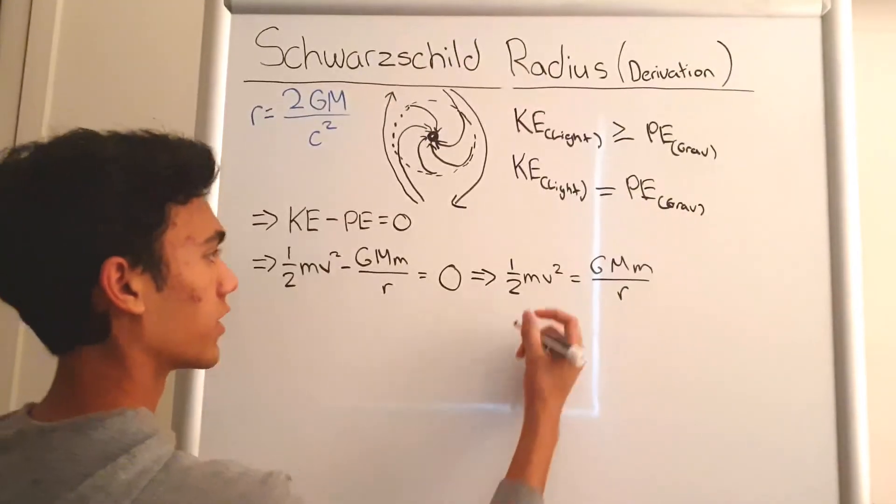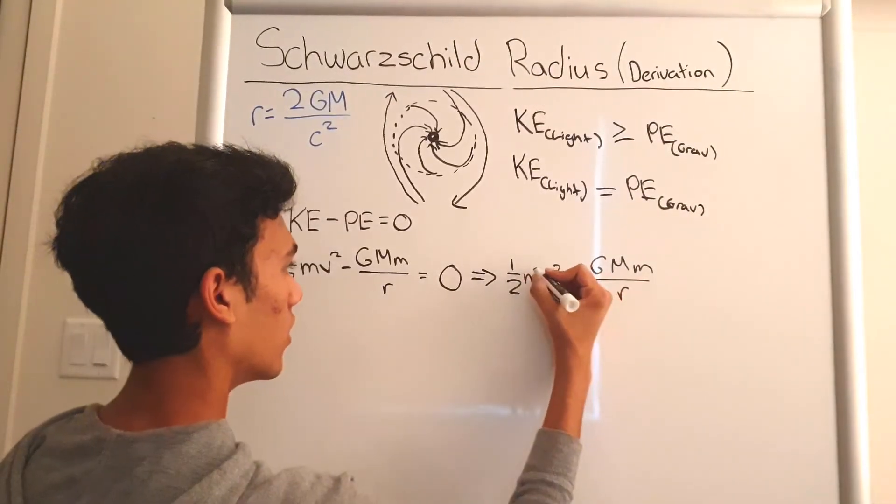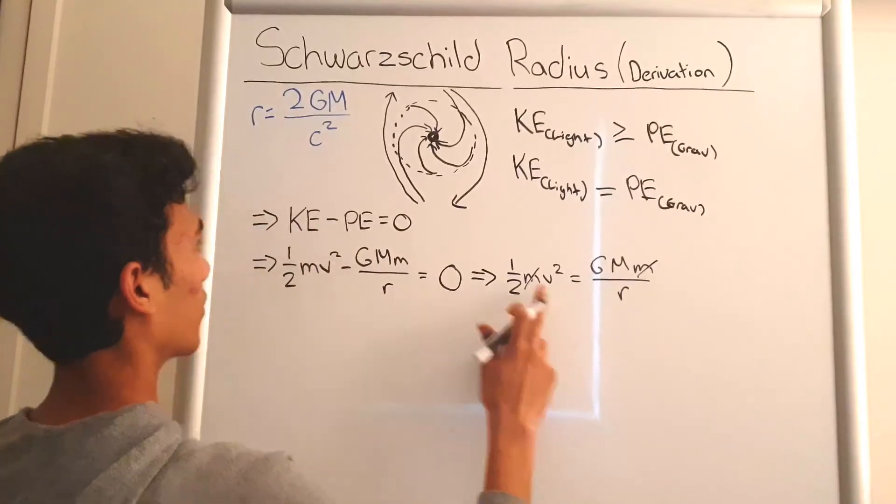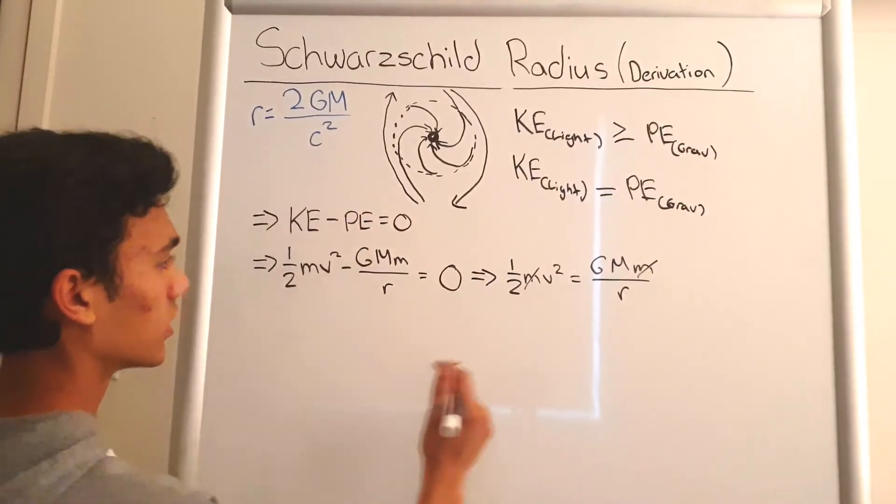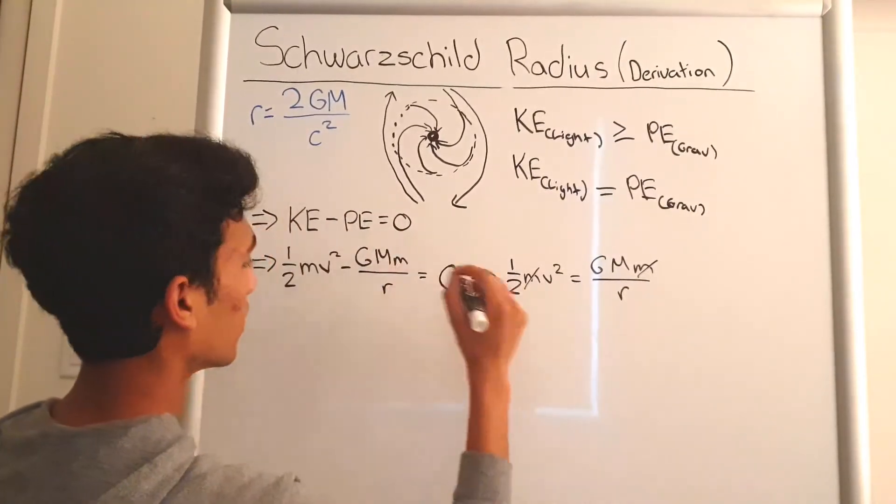We have two small m's, that means they can cancel out. And we know the velocity for the speed of light is going to be c, so we can just plug in c for v.